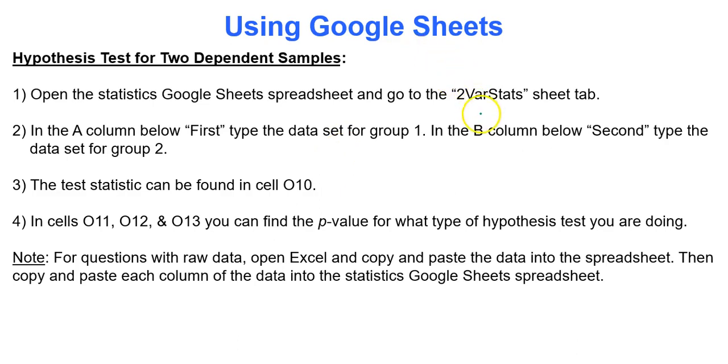Basically we'll write out our hypotheses for our test, and then we'll get a p-value compared to the significance level and go from there. To get our p-value, we will use in the Google Sheets spreadsheet the two variable stats tab, and then type our data values into column A and column B. Cell O10 will give us our test statistic, and our p-value will be given in O11, O12, or O13, depending on what type of hypothesis test we are using.